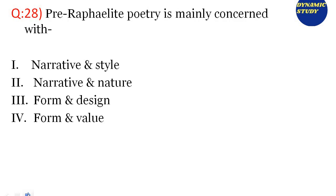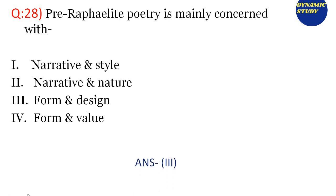Question 28: Pre-Raphaelite poetry is mainly concerned with — Option 1: narrative and style. Option 2: narrative and nature. Option 3: form and design. Option 4: form and value. The right answer is option number 3, form and design.